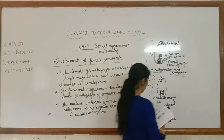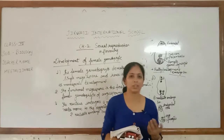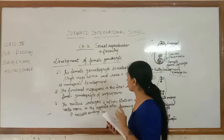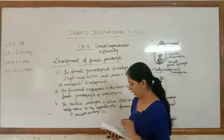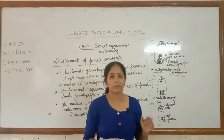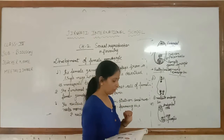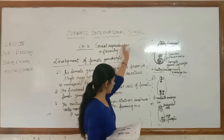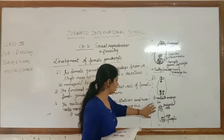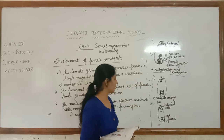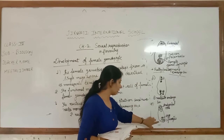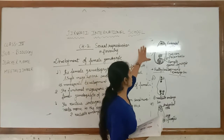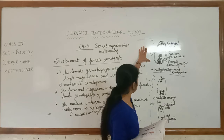So to summarize the stages: one nucleus converts into two nuclei, they go to opposite sides; two convert into four nuclei; four nuclei convert into eight nuclei. In the last stage, the upper part converts into the antipodal cells. The lower part has the egg and synergids.